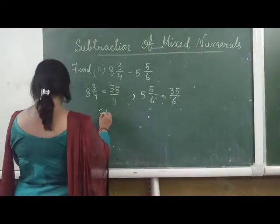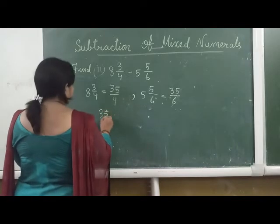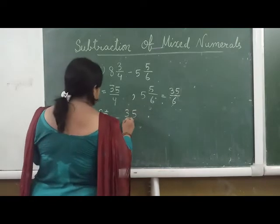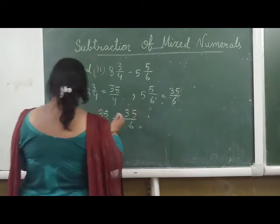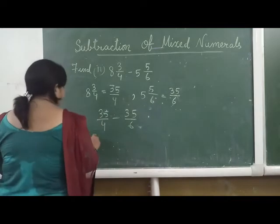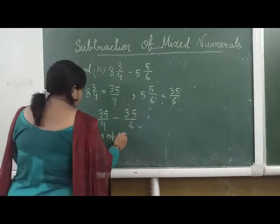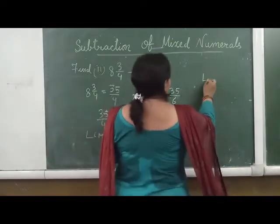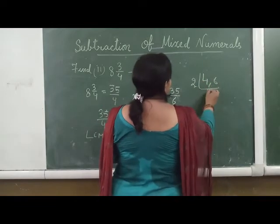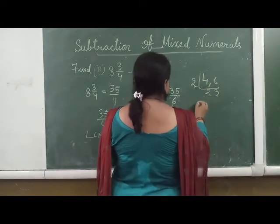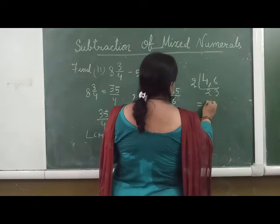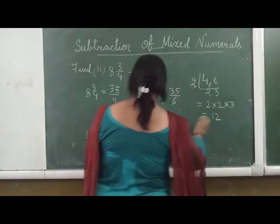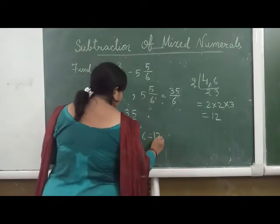So students, we have to subtract 35 by 4 minus 35 by 6. Now we find the LCM of 4 and 6 using the division method: 2 multiplied by 2 multiplied by 3 gives us 12. So the LCM of 4 and 6 is 12.